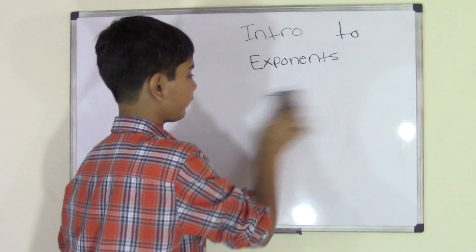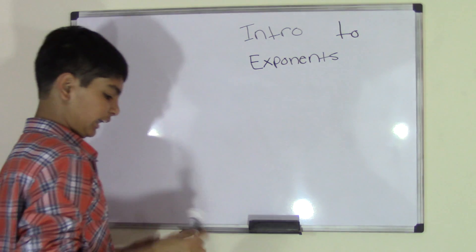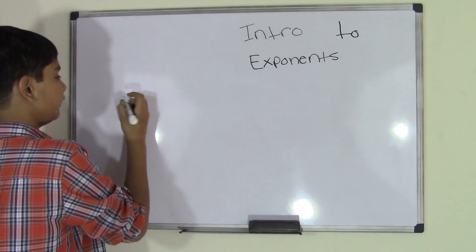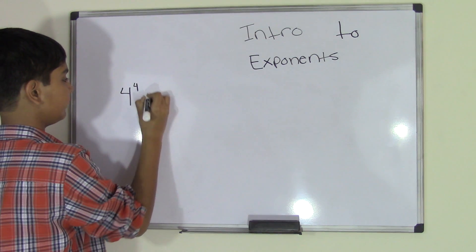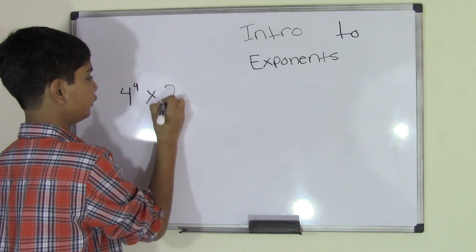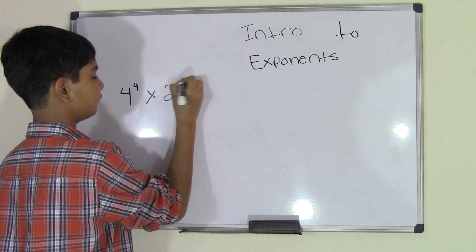And this time, what if we get an exponent itself? What if we get 4 to the power of 4 times 2 to the power of 3?